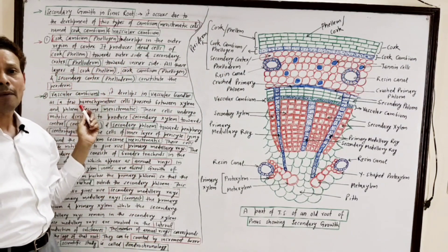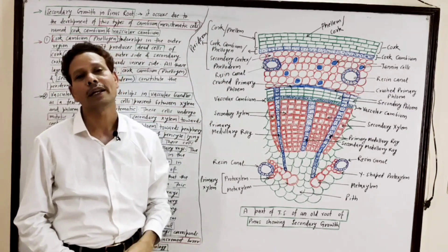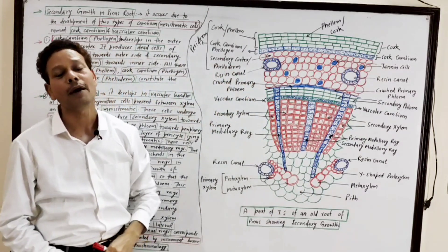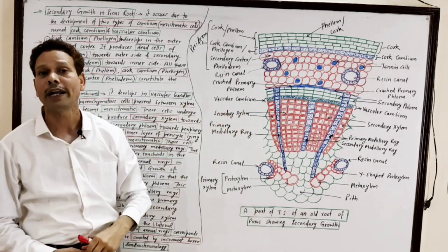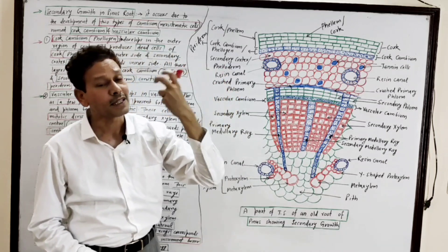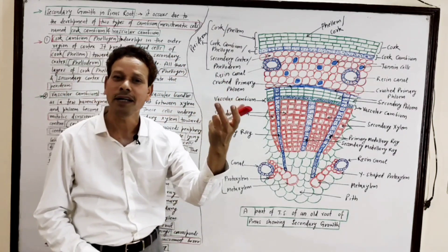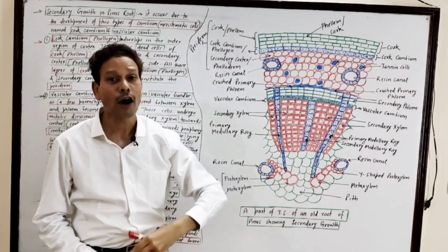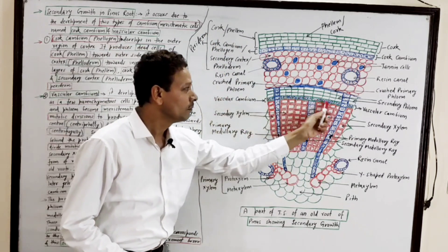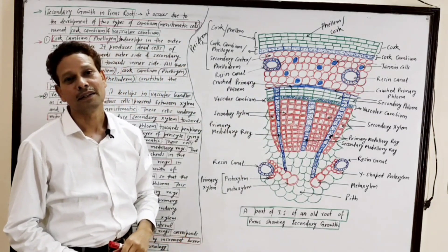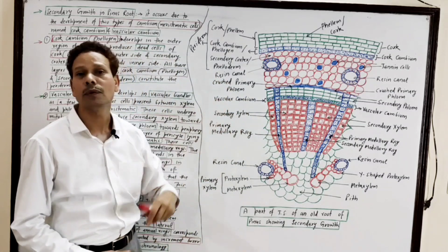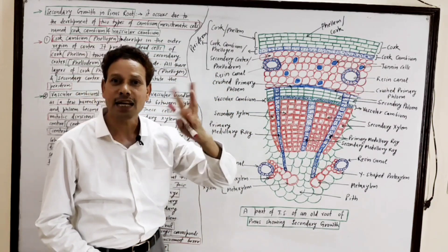The second type of cambium is vascular cambium. This vascular cambium has meristematic cells. It develops because some parenchymatous cells of the vascular bundle — between xylem and phloem, meaning between primary xylem and primary phloem — become meristematic, and this cambium which develops in the vascular tissue is called vascular cambium.